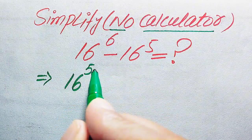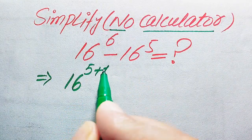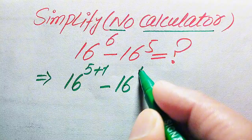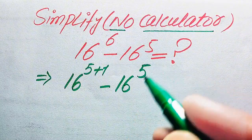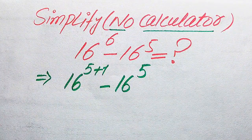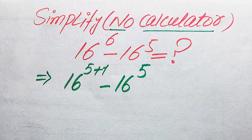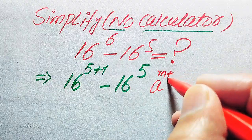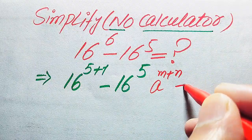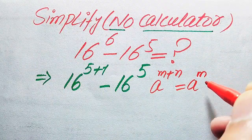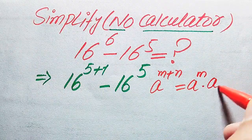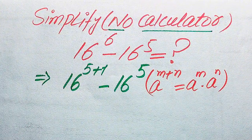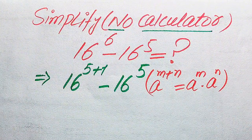We write 16 to the power of 6 as 16 to the power of 5 plus 1, minus 16 to the power of 5. Here we use the exponential law: if we have a to the power of m plus n, it equals a to the power of m multiplied by a to the power of n.